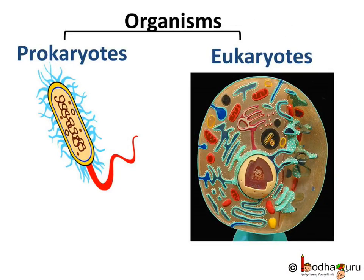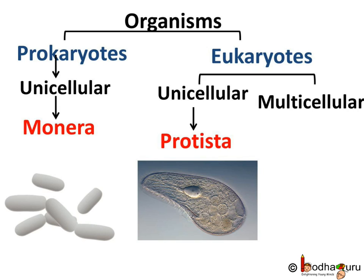So first, we start with the type of cell. Organisms are divided based on the cell type, i.e., are they prokaryotes or eukaryotes. Prokaryote means the nucleus is not well defined and the cell organelles are not membrane bound. Whereas, eukaryote means the nucleus is well defined and the cell organelles are membrane bound.